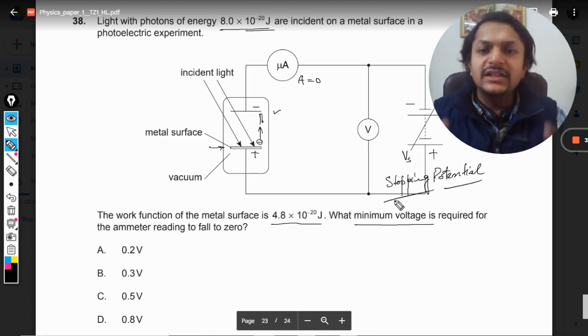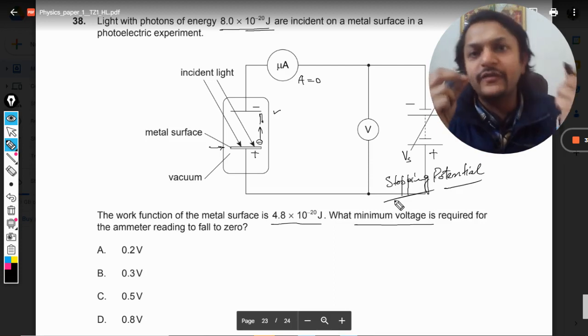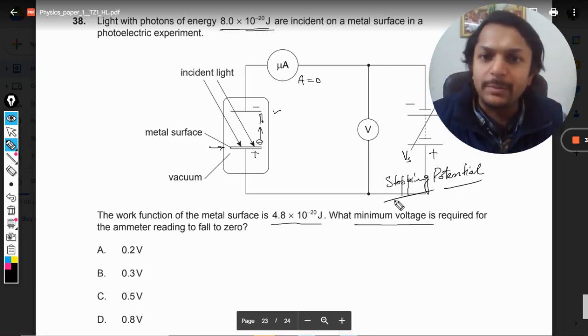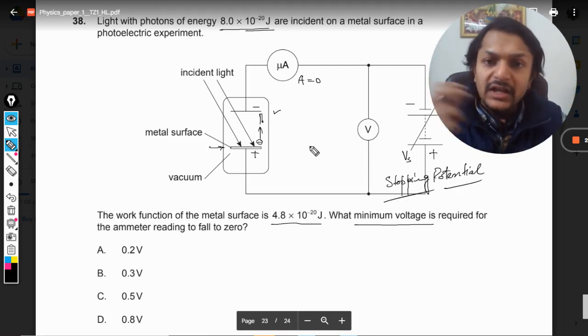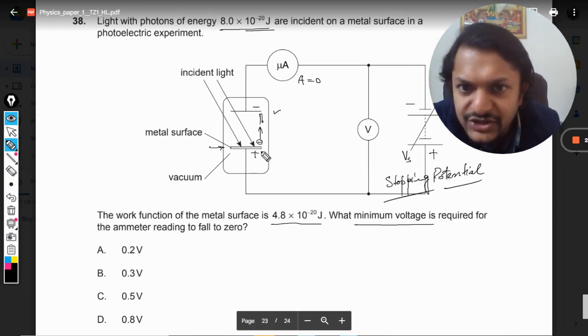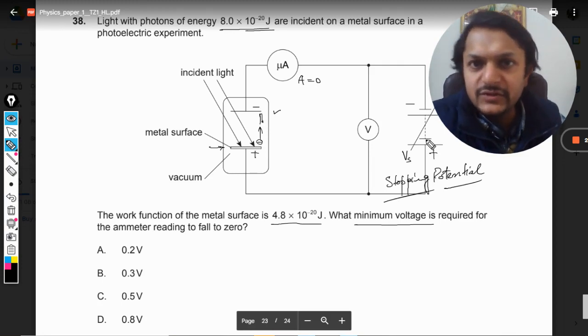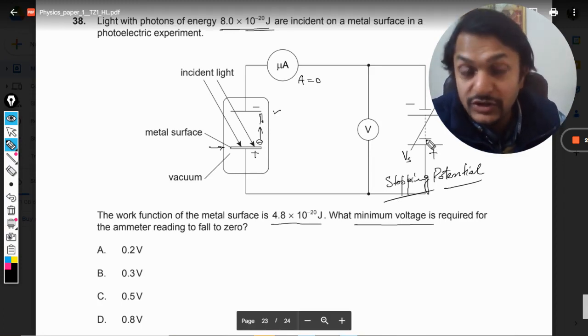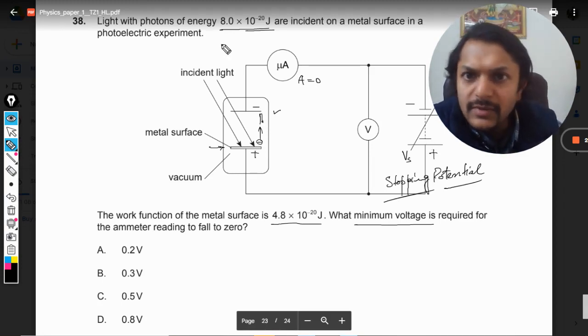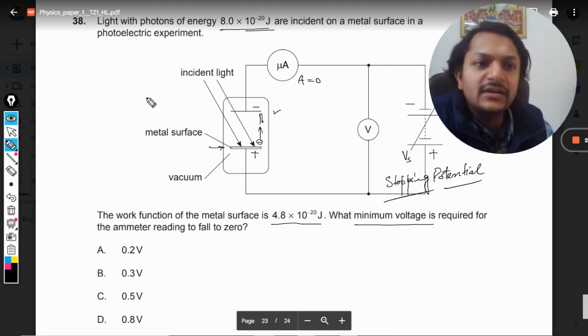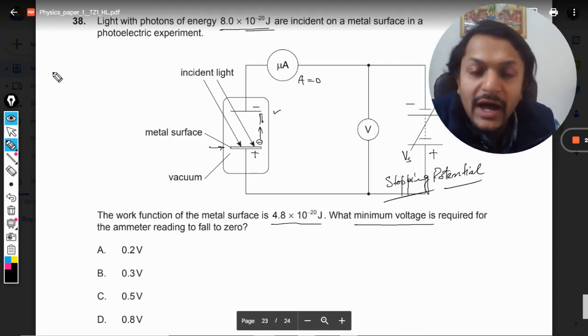This potential at which this thing is done is denoted by Vs and it is known as stopping potential—the potential at which the current will stop, at which the flow of electrons will stop. Now the loss in kinetic energy here by the electron is equal to the energy that is provided by the battery.